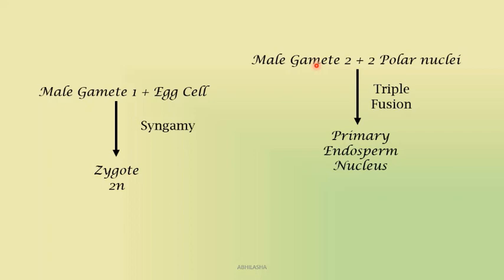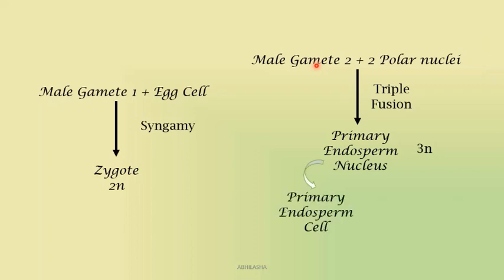Can you tell the ploidy level of this primary endosperm nucleus? One set of chromosomes comes from the male gamete, one from the first polar nucleus, and one from the second polar nucleus — so it has three sets of chromosomes. This central cell with the primary endosperm nucleus is now known as the primary endosperm cell. It is triploid and will form the endosperm later, which will provide nutrition to the developing embryo.